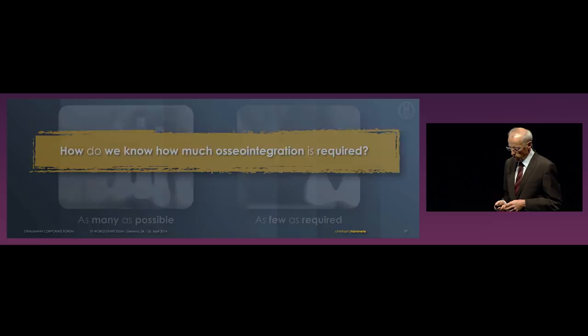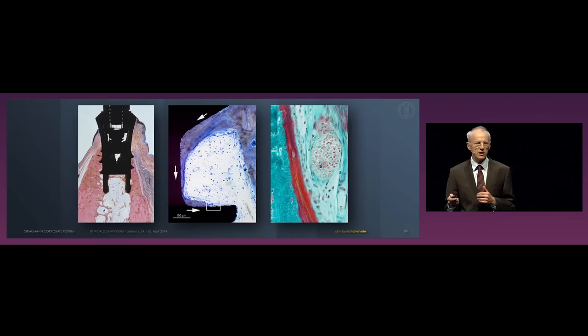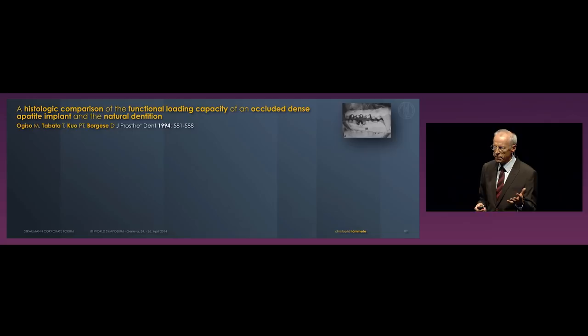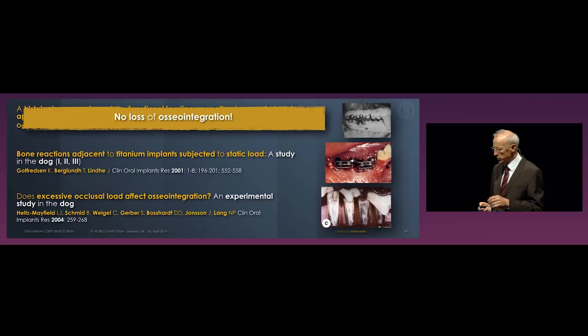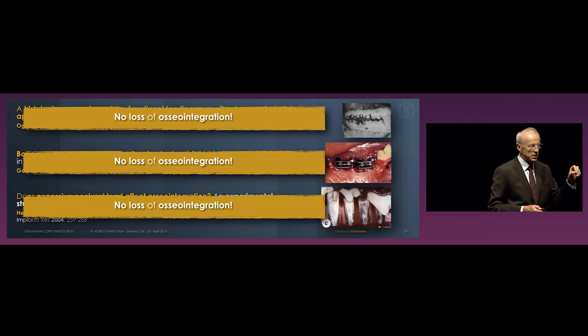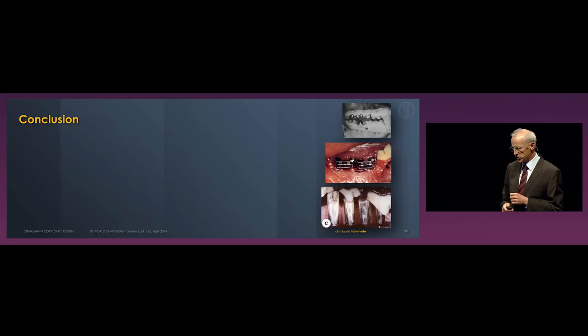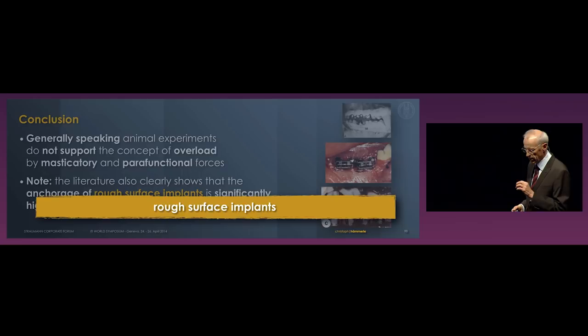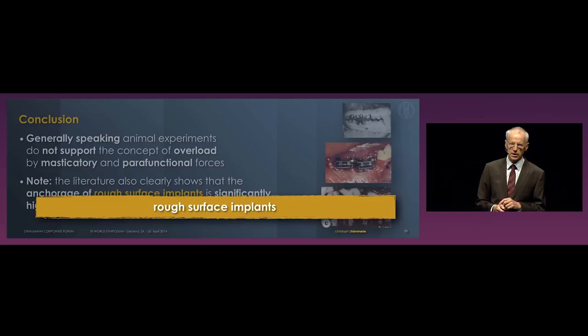One possibility would be to look at histology — beautiful histology of osseointegration — and look at attempts to break osseointegration through animal experiments. There are three animal experiments where intra-occlusal premature, enormous contacts were made. Different groups have studied this, but they did not find a loss of osseointegration in any of their studies. Very few animal experiments were able to break a once-established osseointegration by inter-occlusally occurring forces. The conclusion: animal experiments do not support the concept of overload by masticatory or parafunctional forces. However, the literature shows that the anchorage of rough surface implants is significantly higher than that of machined implants, so we are only speaking about rough surface implants for the remainder of this presentation.